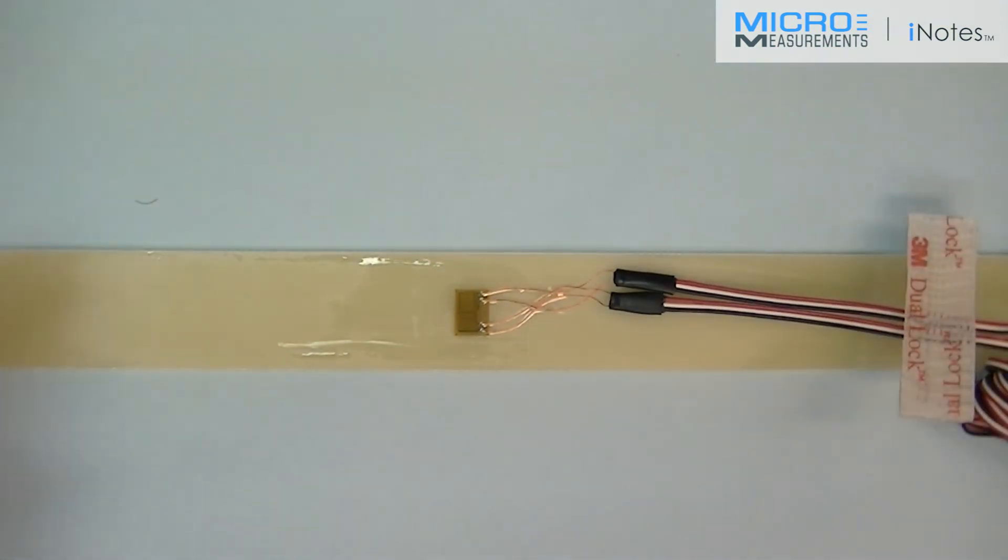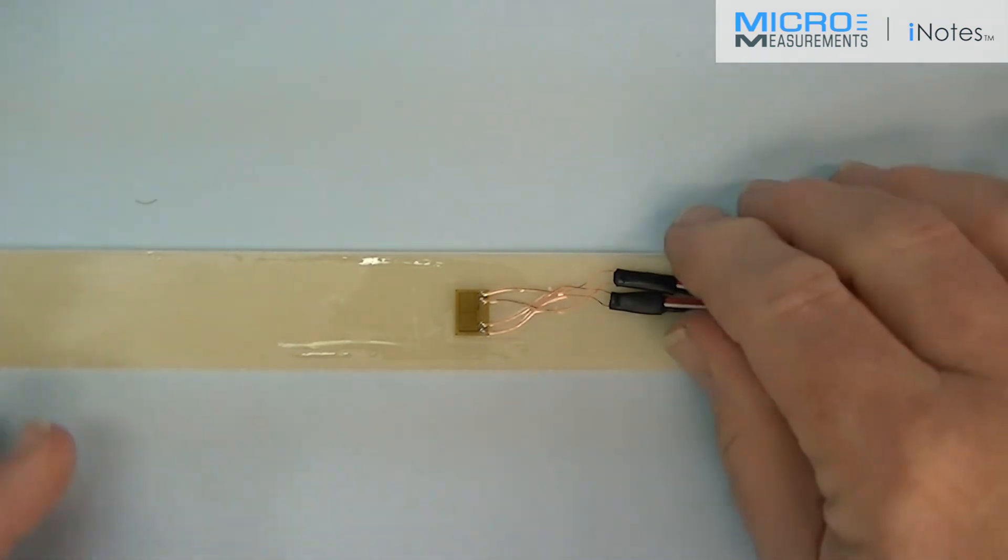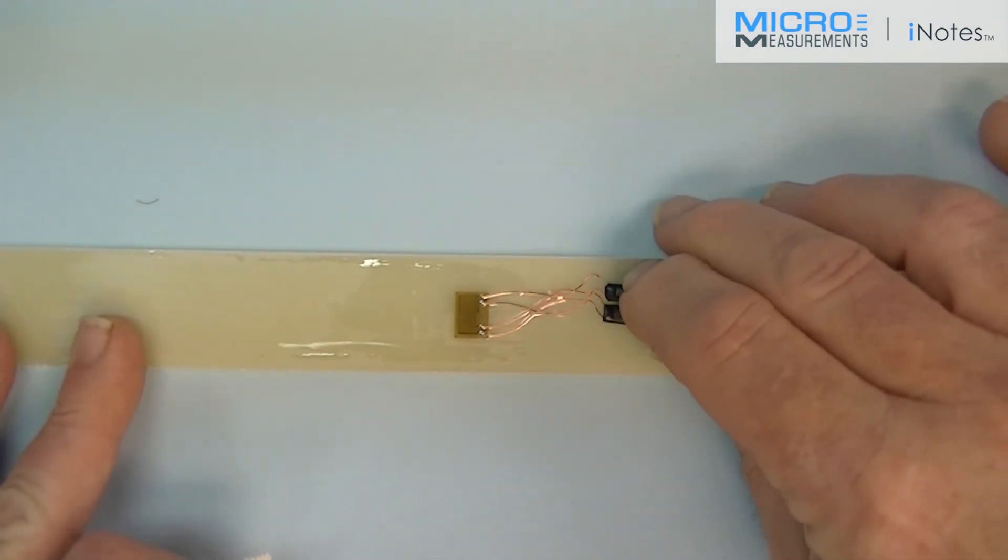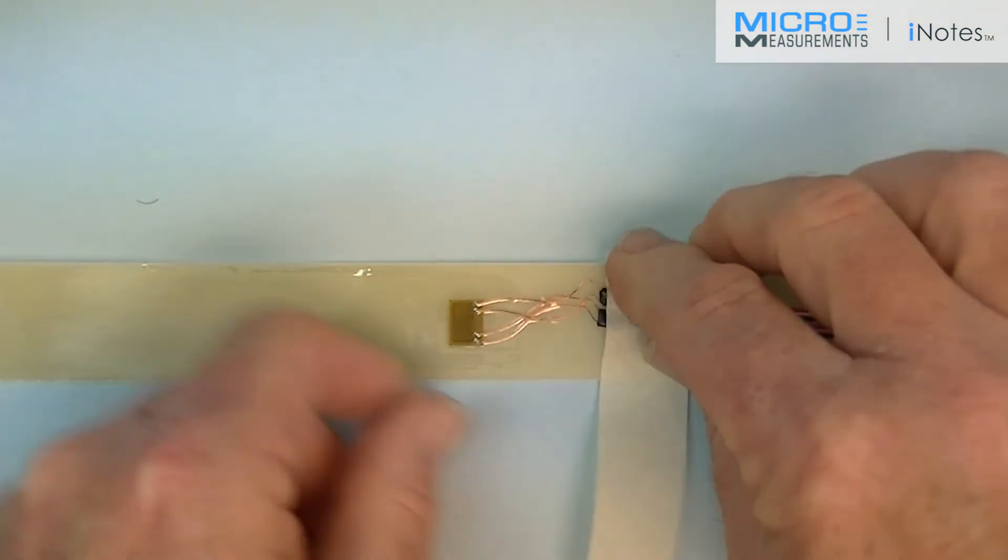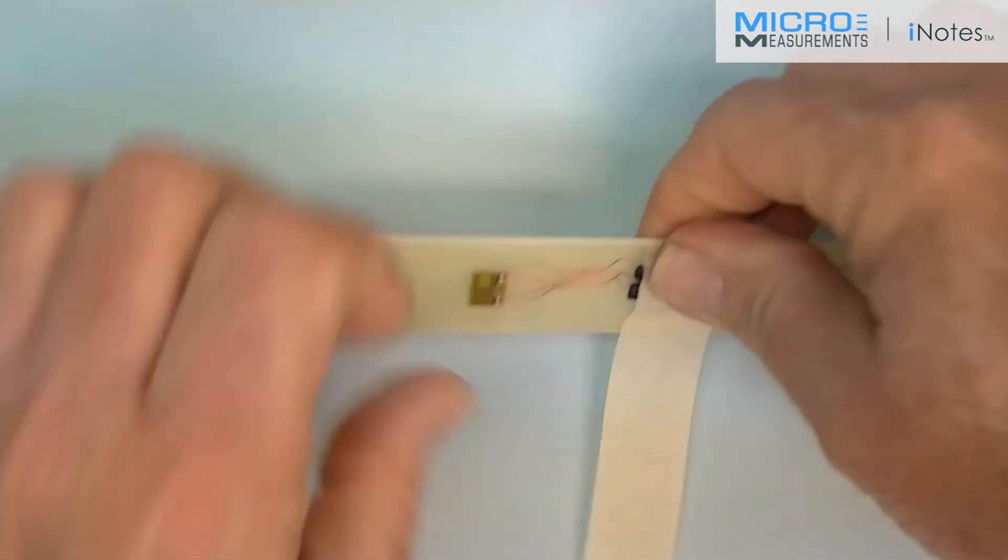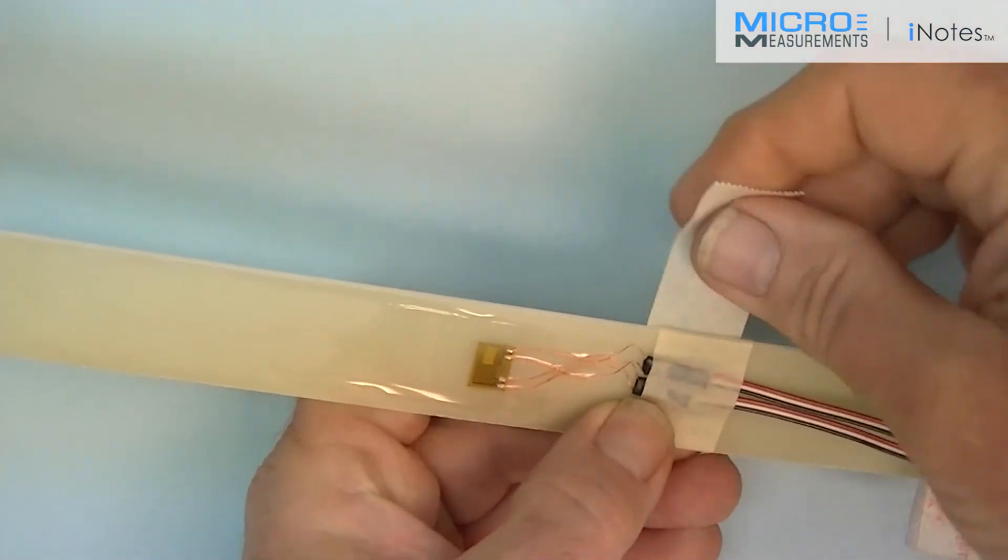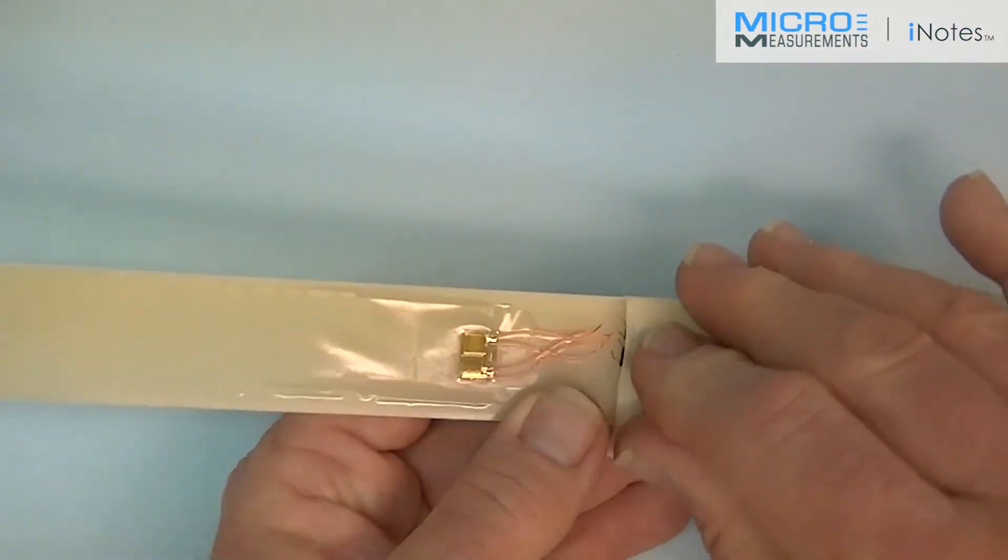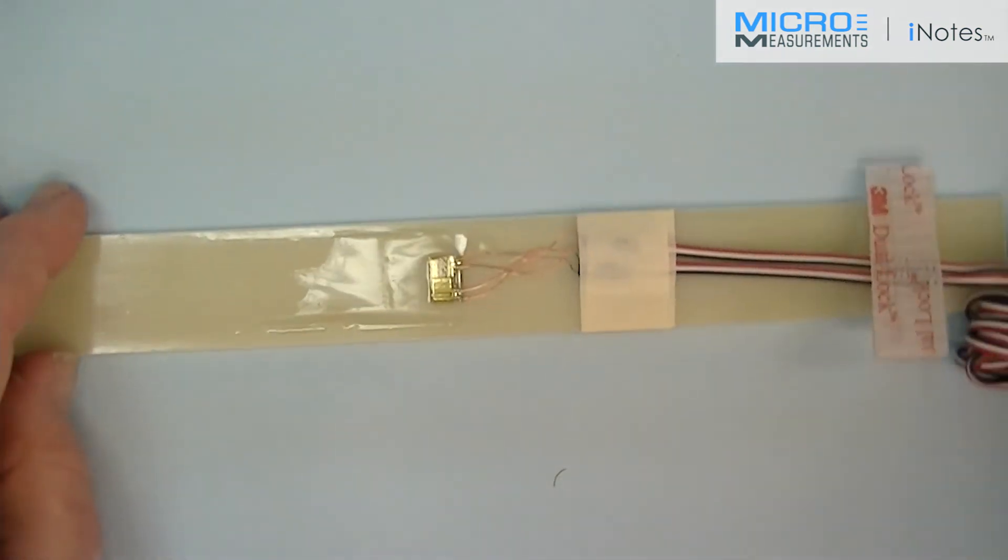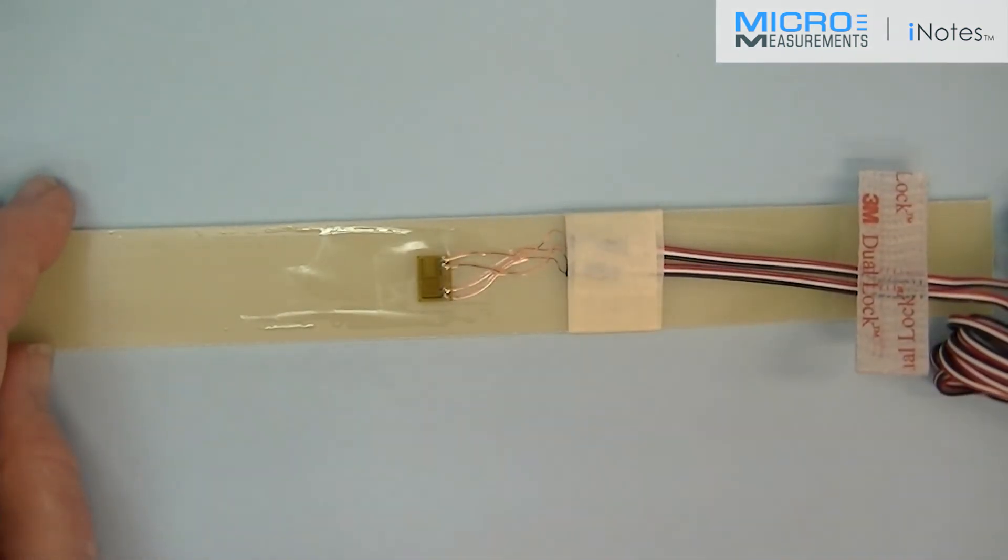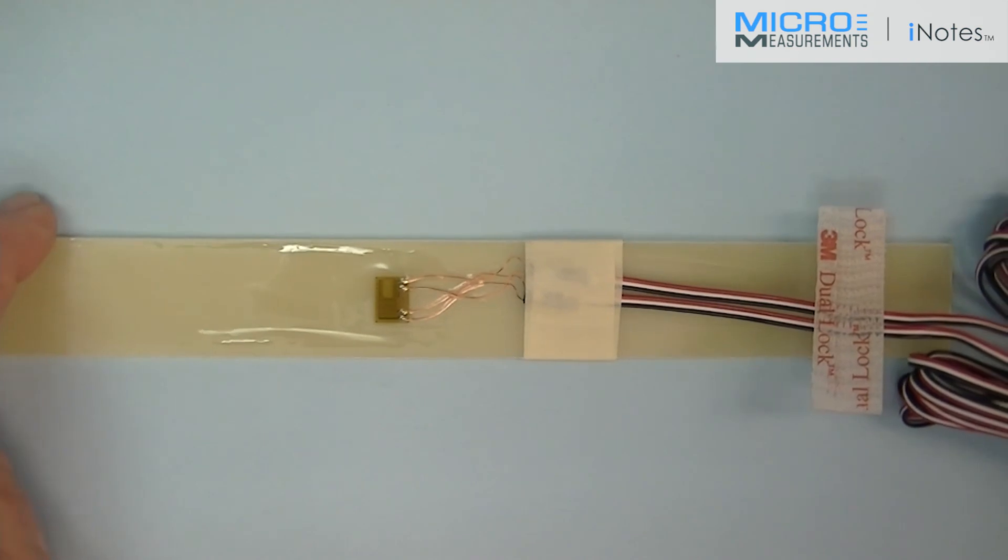The last step would be to provide a strain relief loop. And in this case the little enameled wires will do that. And I'm going to then tape down the vinyl lead wire to the beam. So just in case something happens and somebody yanks on the wire, it's not going to immediately pull it off the beam. And here is a picture of the install gauge.